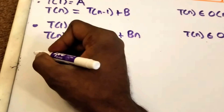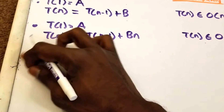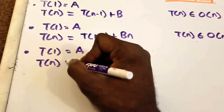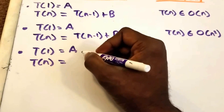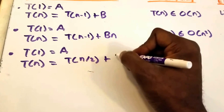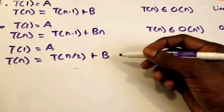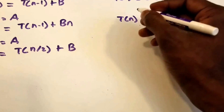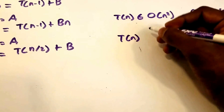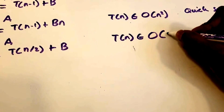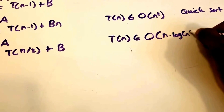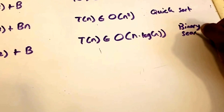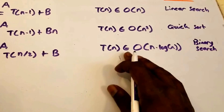Let's take a look at another recurrence — I'll write this a bit closer up so we don't run out of room. T(1) = a, and then our recurrence relation says T(n) = T(n/2) + B, where a and B are constants — non-negative integer values. The time complexity here will be O(n log n), and a good example of this would be the binary search algorithm.